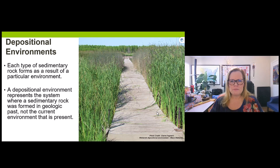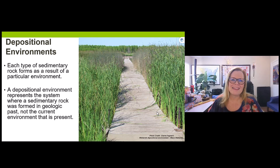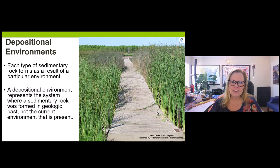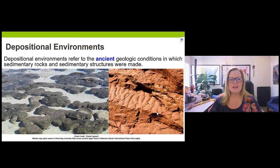The depositional environment we care about in geology is the environment in which rocks were formed when they were made — not what may exist there today. For example, Death Valley is a desert eolian environment now and was when its rocks were made — but not 100% of its existence has been a desert. We look at all the clues around us to get that information.